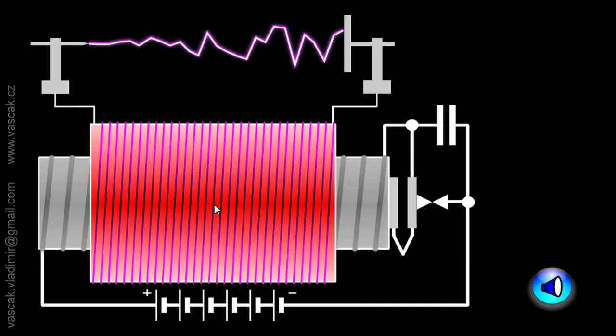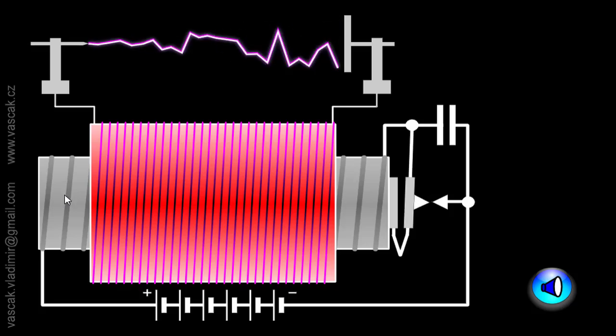So again let's see, from this DC supply due to Ampere's law, now this will generate the magnetic field. This coil, this inner coil will generate the magnetic field.